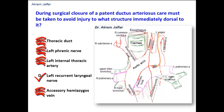The reason the left recurrent laryngeal nerve descends into the superior mediastinum and gets caught by the ductus arteriosus is related to embryological origin. The recurrent laryngeal nerve, whether right or left, is the nerve of the 6th pharyngeal arch, and it recurs around the artery of the 6th pharyngeal arch. On the left side, it recurs around the 6th aortic arch — the left 6th aortic arch.